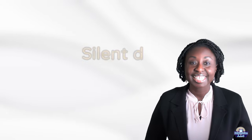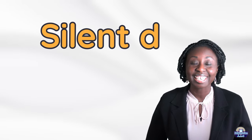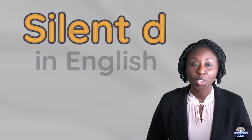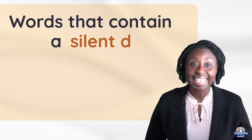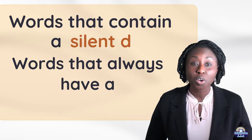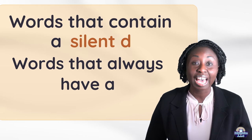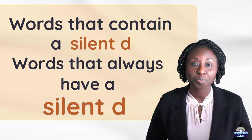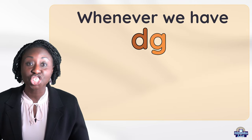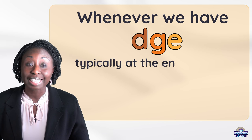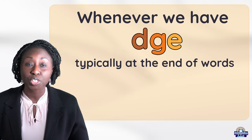Hi guys, today we will be looking at silent D in English — words that contain a silent D. Words that always have a silent D: whenever we have D-G-E, typically at the end of words but not always, it normally becomes a J sound.